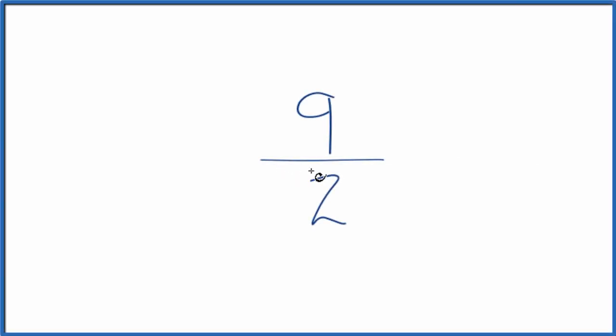All right, let's simplify the fraction 9 over 2, also called 9 halves, to its lowest terms.